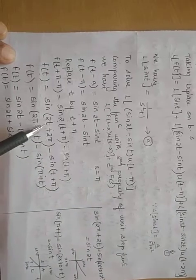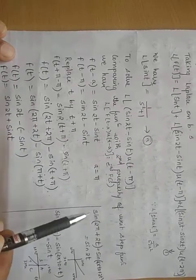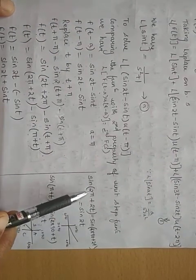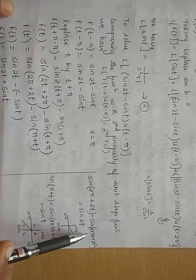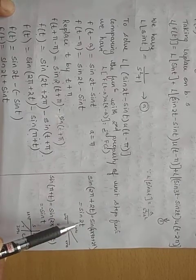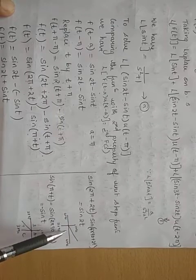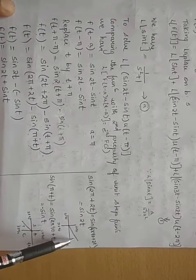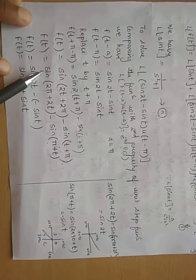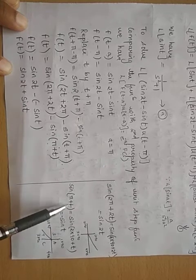Expanding: f(t) = sin(2t+2π) − sin(t+π). Simplifying sin(2π+2t): writing 2π as 4×90°, we have 4×90°+2t. Since 4 is even, sin remains sin, and 4×90°+2t lies in the first quadrant where all ratios are positive. So sin(2π+2t) = sin(2t).